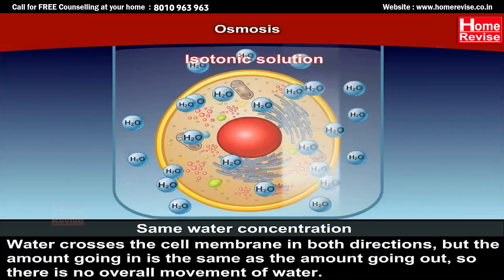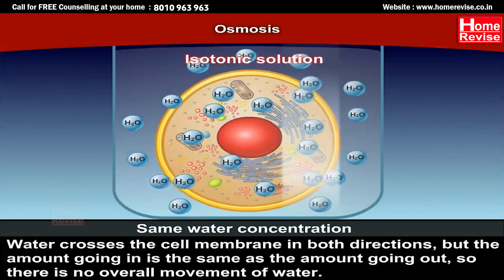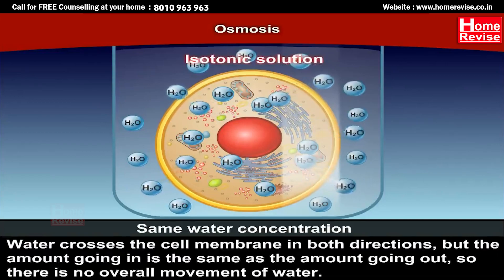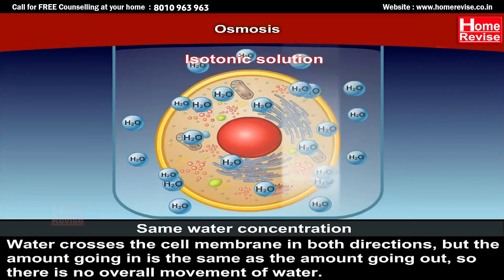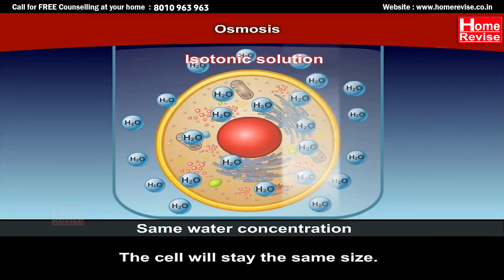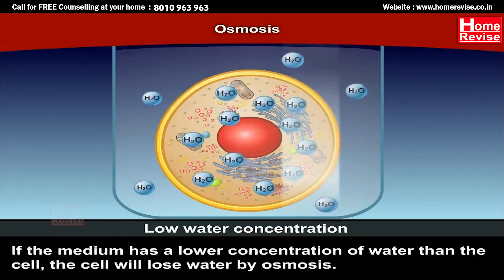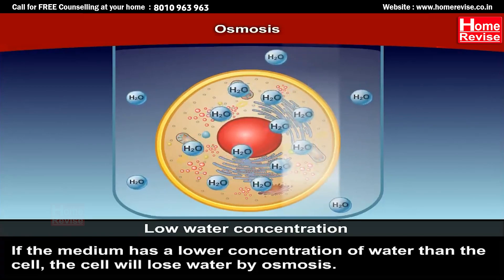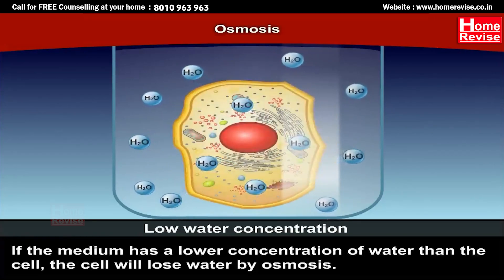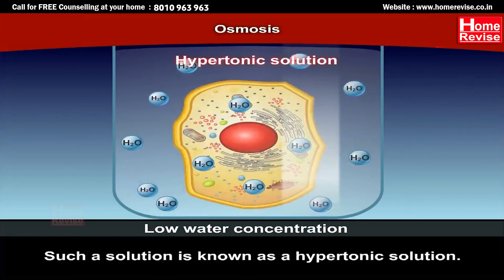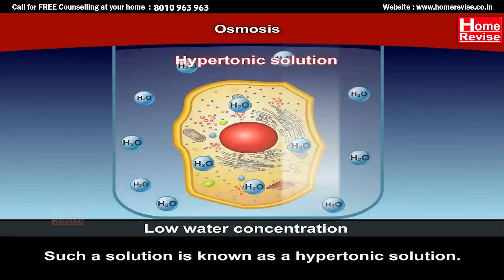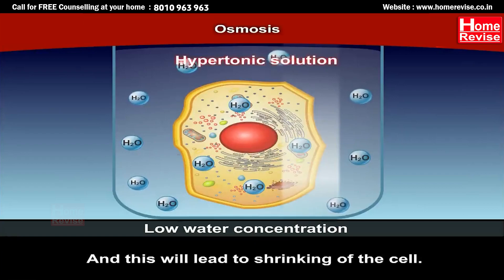In an isotonic solution, water does cross the cell membrane in both directions, but the amount going in is the same as the amount going out, so there is no overall movement of water and the cell stays the same size. There is a third possibility: if the medium has a lower concentration of water than the cell, the cell will lose water by osmosis. Such a solution is known as a hypertonic solution, and this will lead to shrinking of the cell.